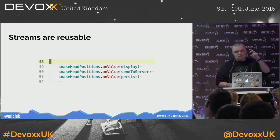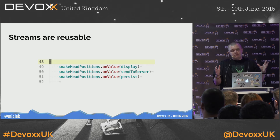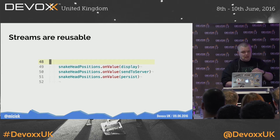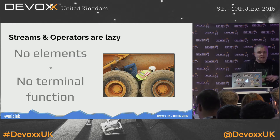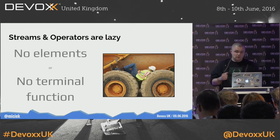Two properties of streams I haven't mentioned yet: first, they are reusable — we can send the same stream to the display function and also to the server, or persist it. Second, if there are no terminal functions like onValue, then nothing happens — no CPU cycles are wasted. So streams are very lazy.